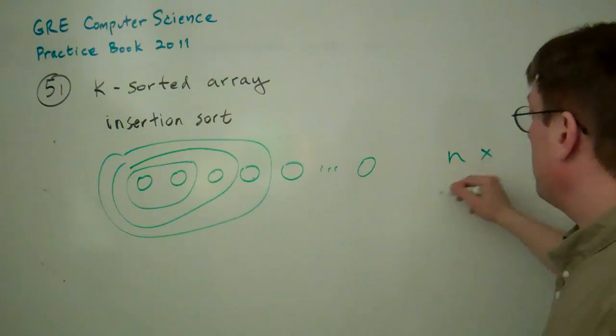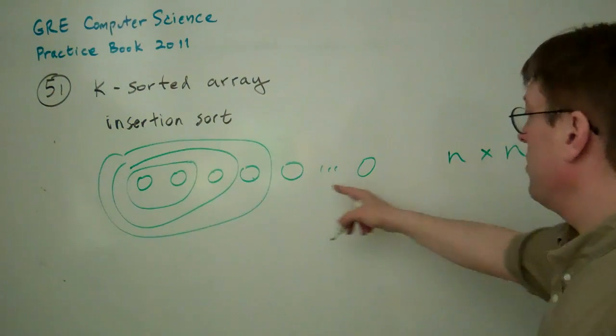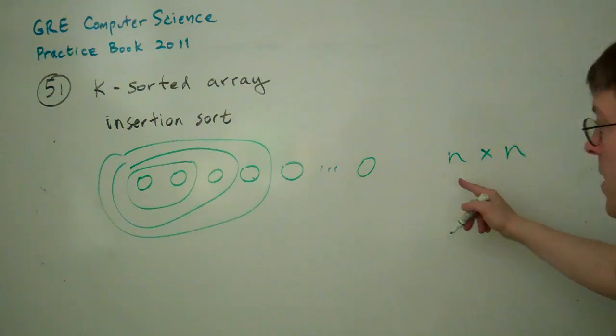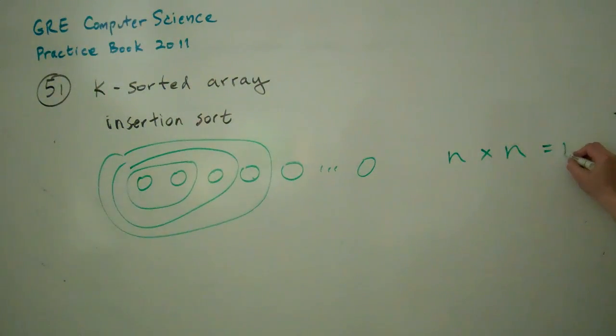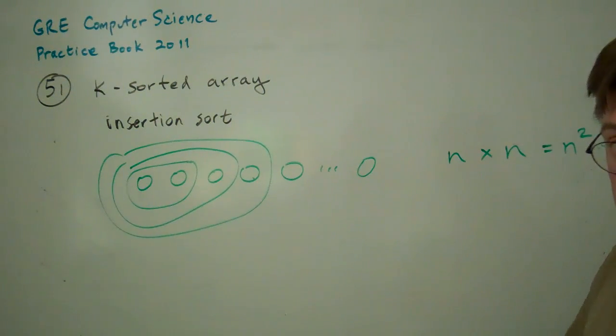And you're also going to multiply, each one of these things is n, this growth rate of n. So basically, n squared is the worst case situation for the insertion sort algorithm.